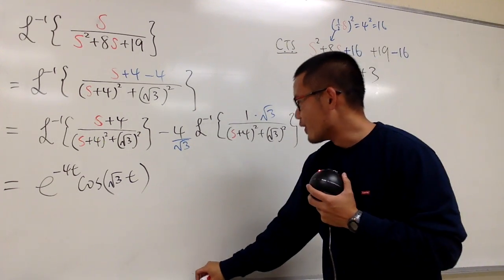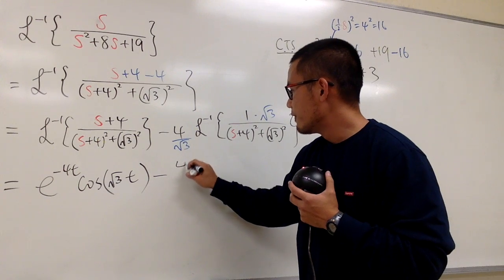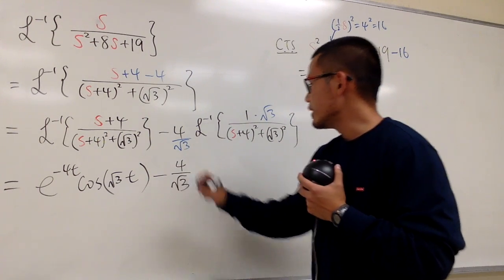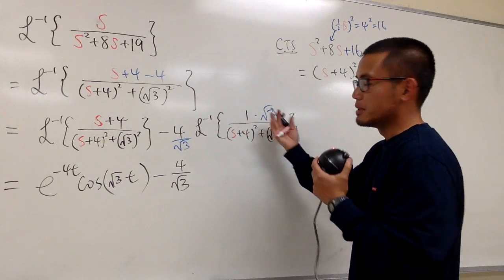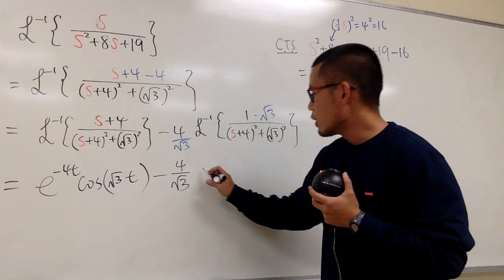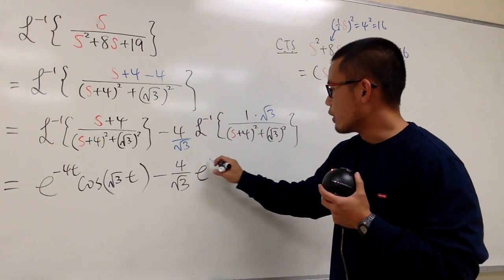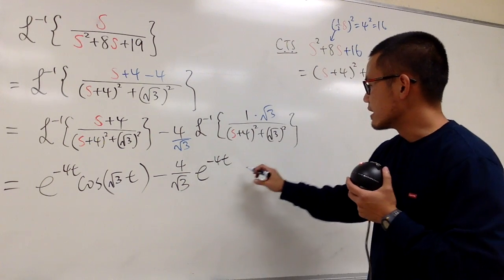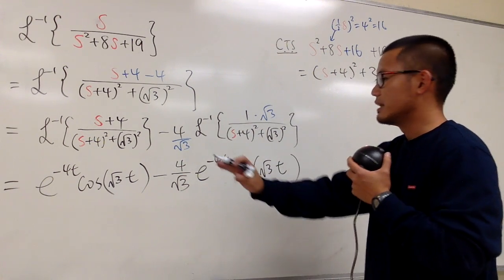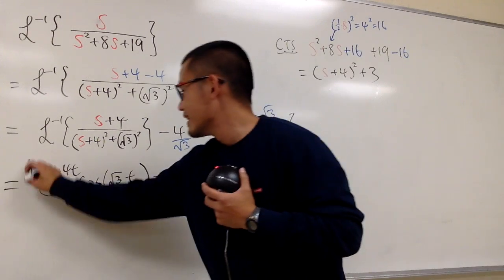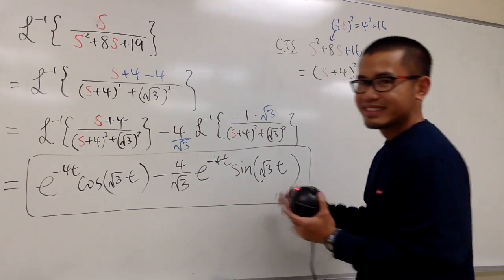This is wonderful because we're done. This is minus 4 over square root of 3, and we still have the e to the something because this has been shifted as well. E to the negative 4t again, and this is the sine situation, sine of square root of 3 times t like this. And this right here is it.